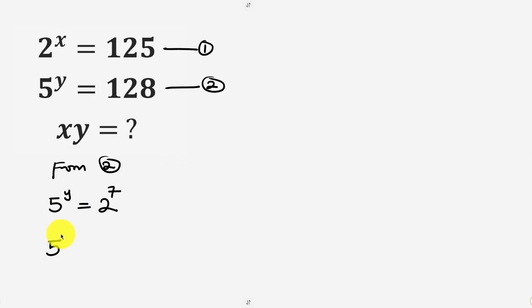So we have 5 to the power of y, multiply the exponent by 1 over y, equal to 2 to the power of 7. We also multiply the exponent by 1 over y to balance it up. Now notice that this y cancels out this y leaving behind 5 to be equal to 2 to the power of 7 over y.